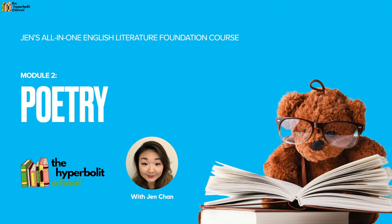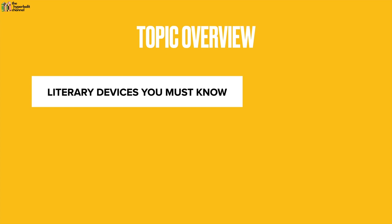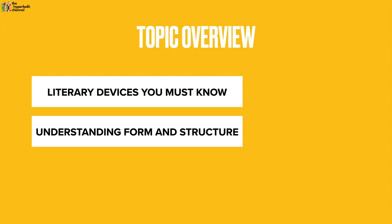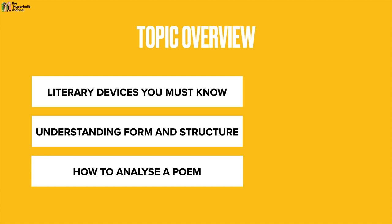Hello and welcome to module two of our all-in-one English Lit Foundation course. In this module we are going to be looking at poetry. First we're going to look at the literary devices that you absolutely must know, then we're going to move on to understanding the difference between form and structure, and finally we're going to look at the steps to analyzing any poem. I've organized it in terms of a pyramid which you'll see on the right.